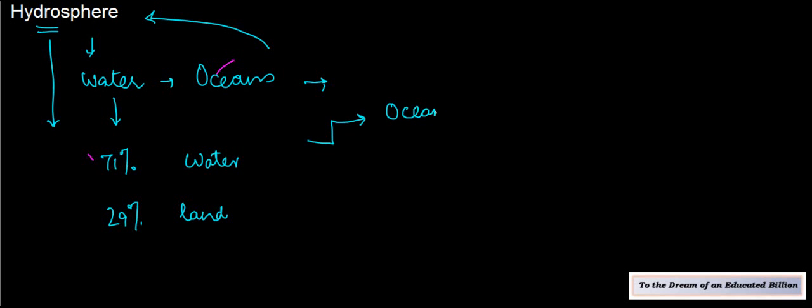Now hydrosphere itself would comprise of several things. It would comprise of ocean, it would comprise of vapors which are there in the atmosphere, and even the one which is covered as a part of rivers.